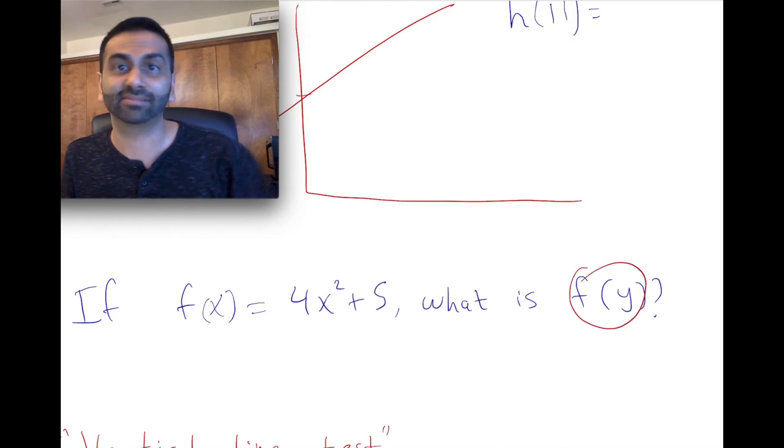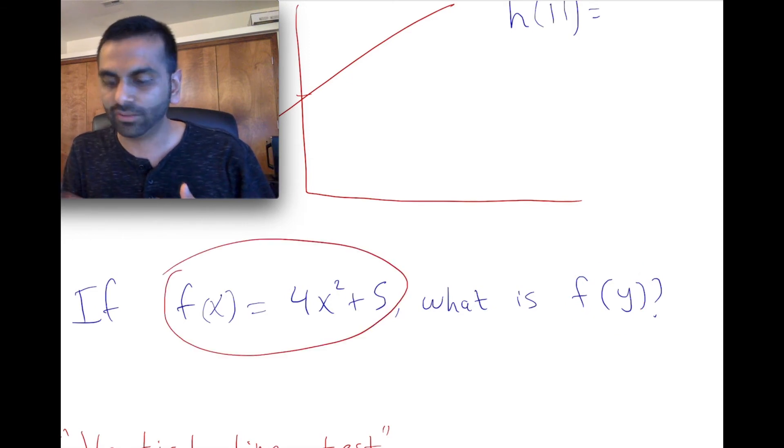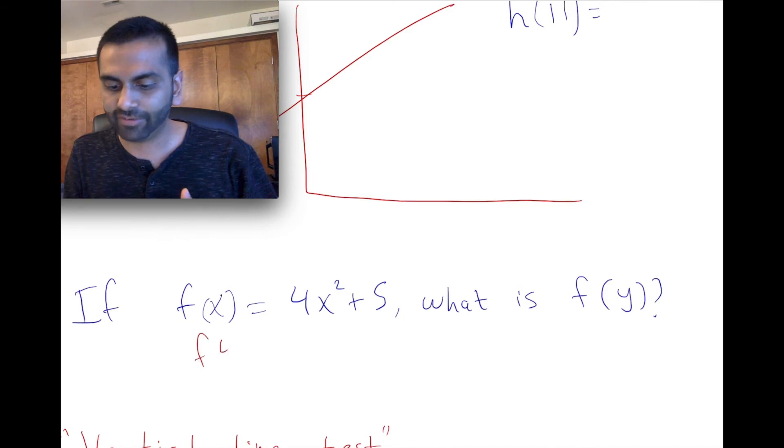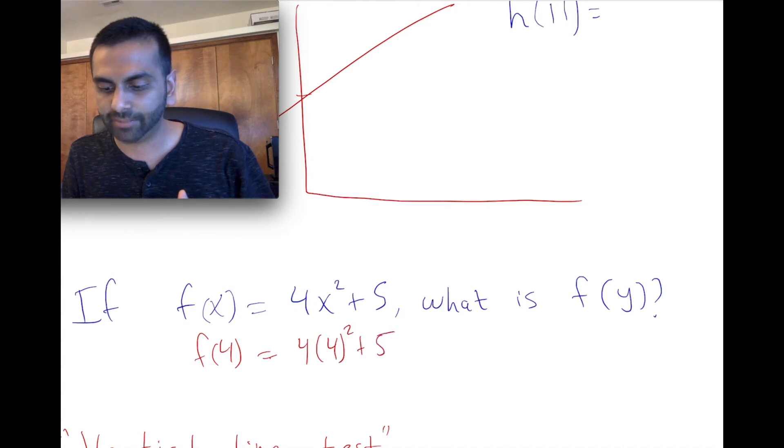So if I were to give you this guy and ask you, what's f(4)? You'd answer it by saying, well, f(4) is 4 times, you just replace the x with a 4, right? And you'd get a number. So similarly, it's no different if I were to ask you, what's f(y)? You literally just replace the x with a y. It's 4y squared plus 5.